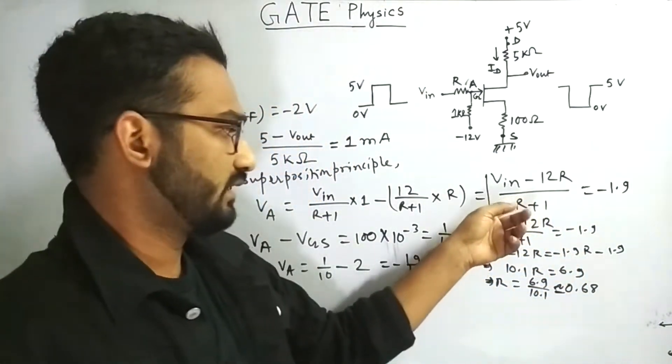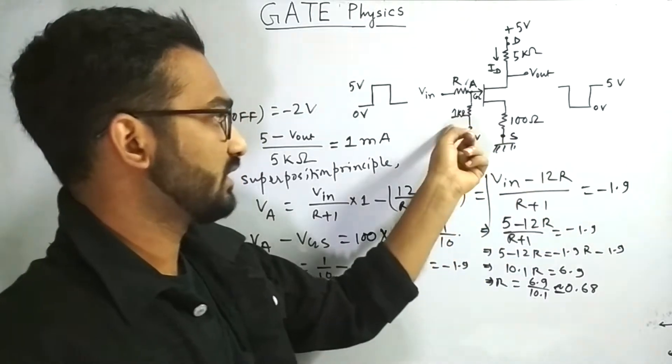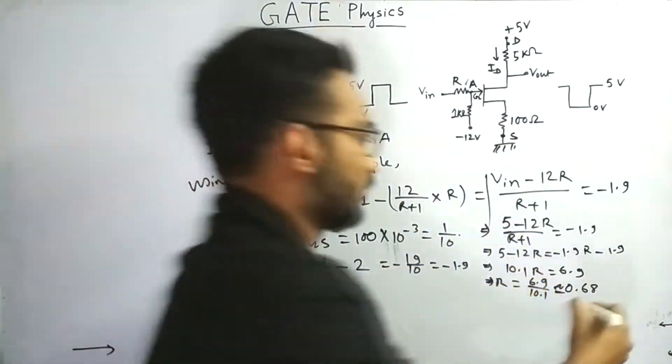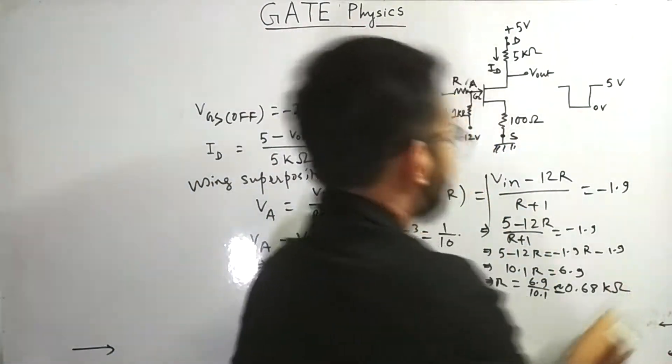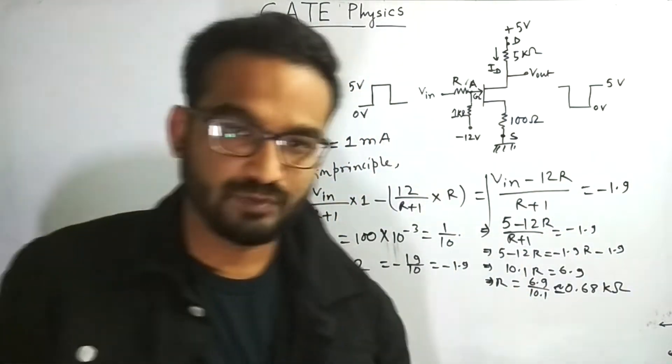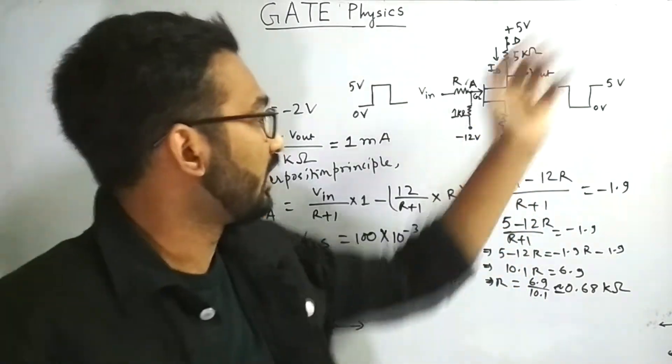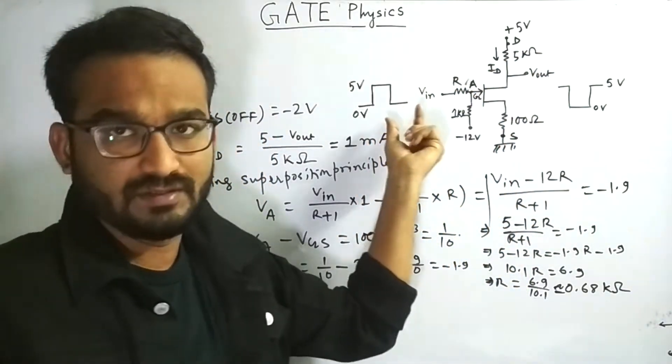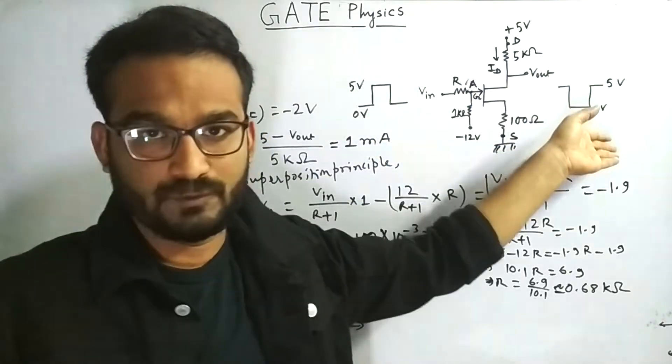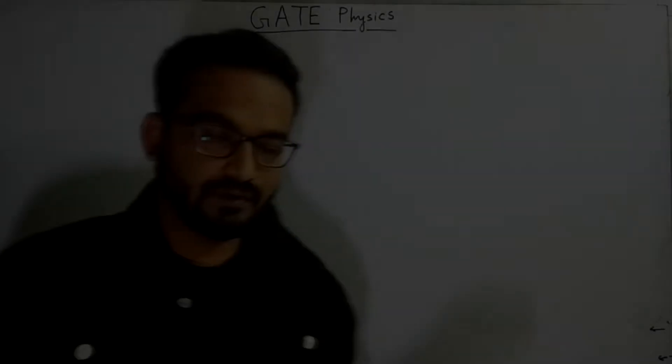Now as you can see, here R plus 1 and 1 was in kiloohm. So R must be in kiloohm. So 0.68 kiloohm. So this is the required maximum allowed value of R, which will allow the circuit to invert the signal from this to this.